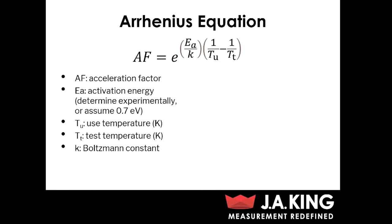E sub A is your activation energy. This value is actually based on material properties — typically it's determined experimentally. But if you're limited on the data you have, typically a standard value of 0.7 electron volts can be used. And then you've got your two temperatures: T sub U, the use temperature, which is the temperature that your part is actually going to see in the field, and T sub T, which is your test temperature. Keep in mind, both of these are in Kelvin, which will be important when you plug them into the equation. And then K is just your Boltzmann constant.